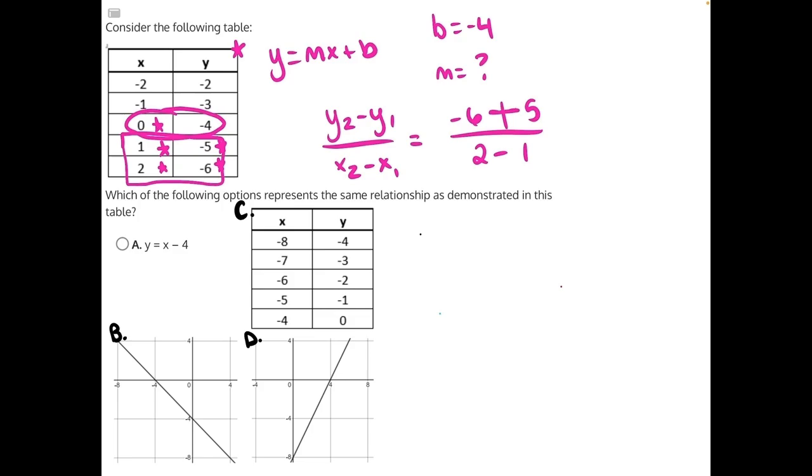So a negative 6 plus 5 will give us negative 1, and 2 minus 1 will give us a positive 1. Altogether, when we divide, that would be negative 1.